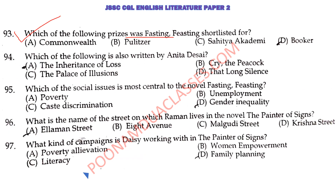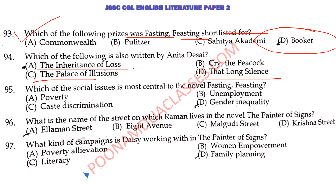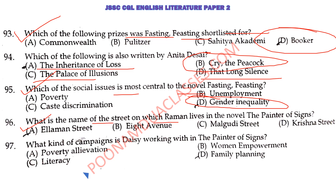Which of the following prizes was Fasting Feasting shortlisted for? The answer is the Booker Prize. Which of the following is also written by Anita Desai? Note that The Inheritance of Loss is by Anita Desai's daughter Kiran Desai; Palace of Illusions is by Chitra Banerjee Divakaruni; That Long Silence is by Shashi Deshpande. These writers write in roughly similar styles, which may have been the reason for confusion. Cry the Peacock is the right answer here. The most central social issue in Fasting Feasting is gender equality. What is the name of the street on which Raman lives? It is Ellament Street — asked many times in the Telegram group, MCQs, PDFs and videos.